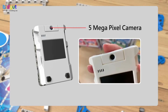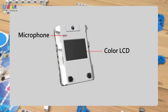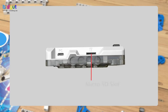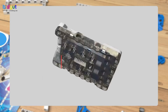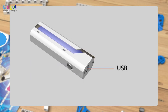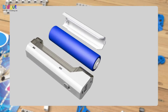In addition, there is a microphone, color LCD screen, and two buttons, a micro SD slot, PC connection port on the reverse side, 12 DuPont ports and a pair of speakers, USB port to power devices, and micro USB port for charging. It is important to use the 18650 lithium battery.